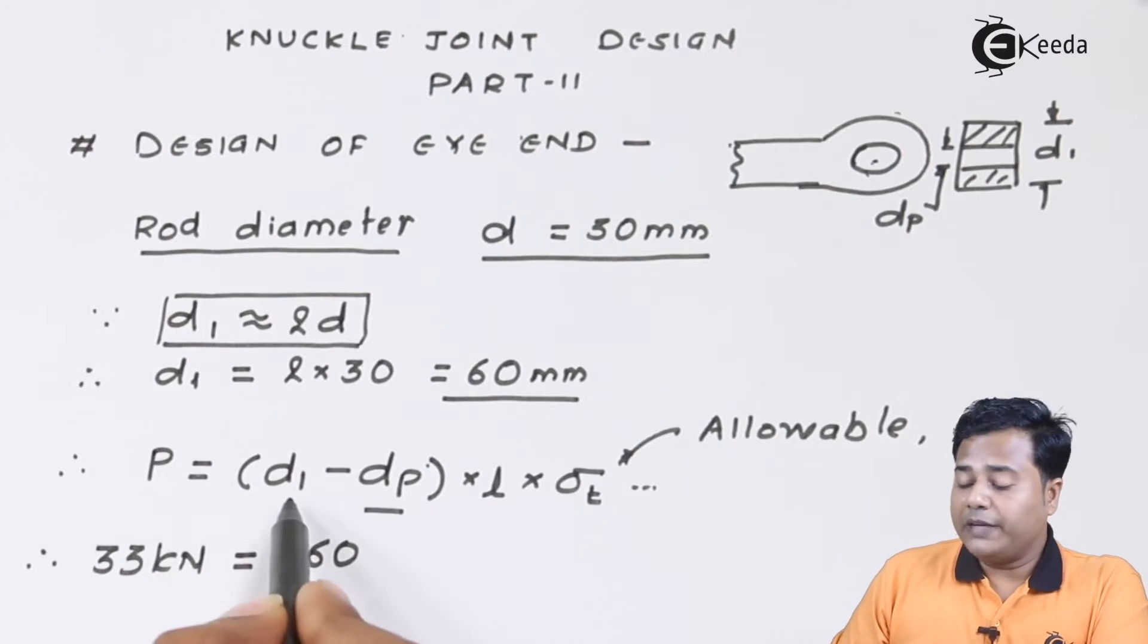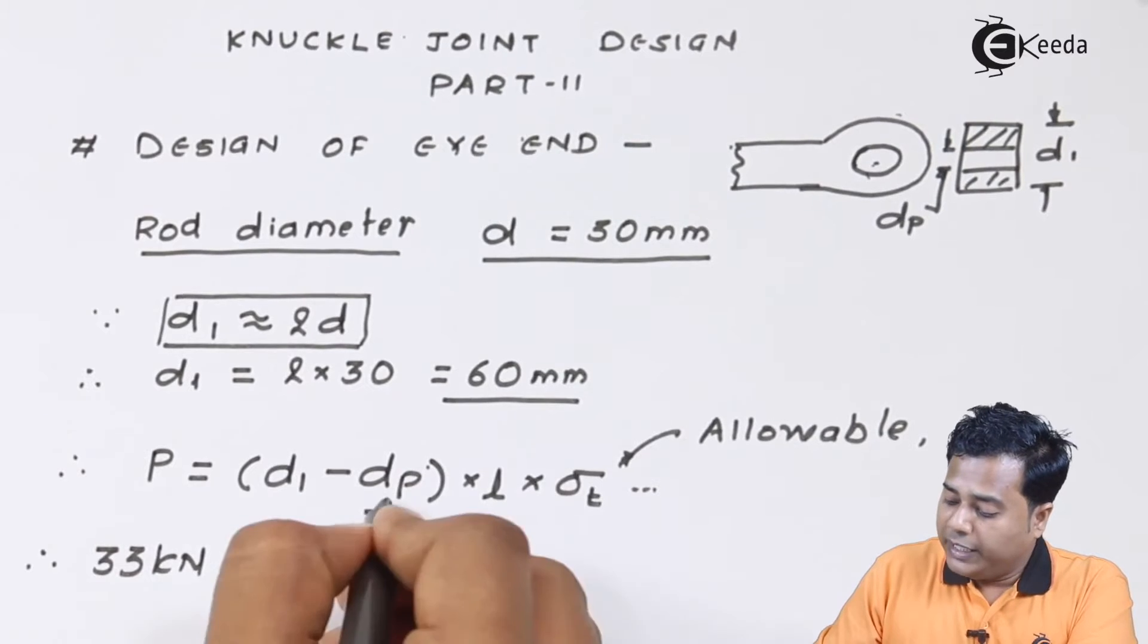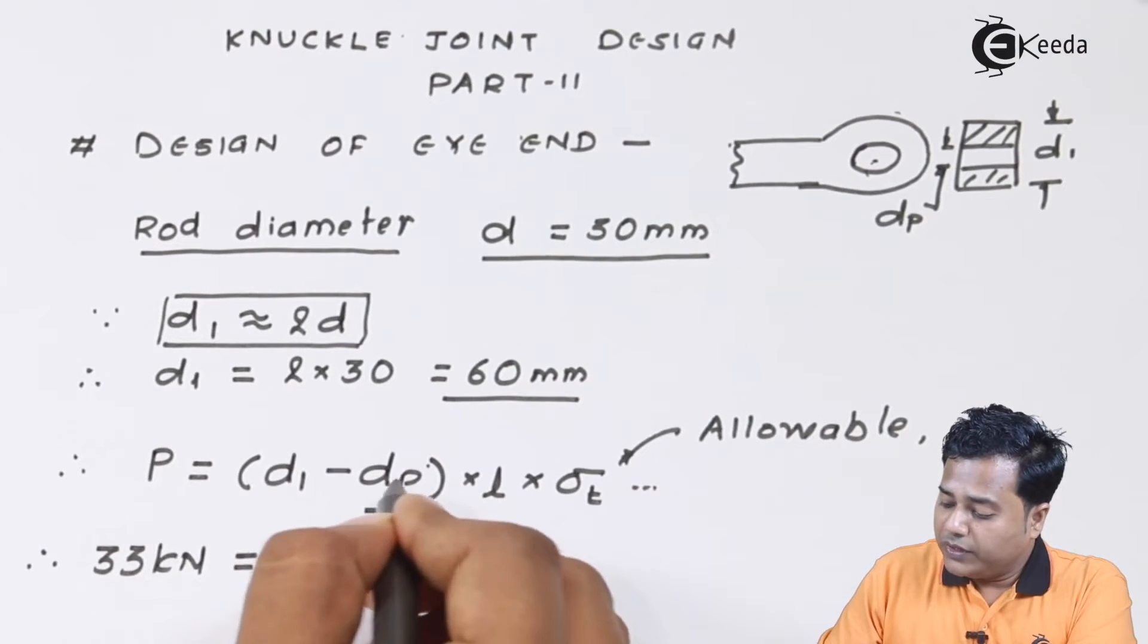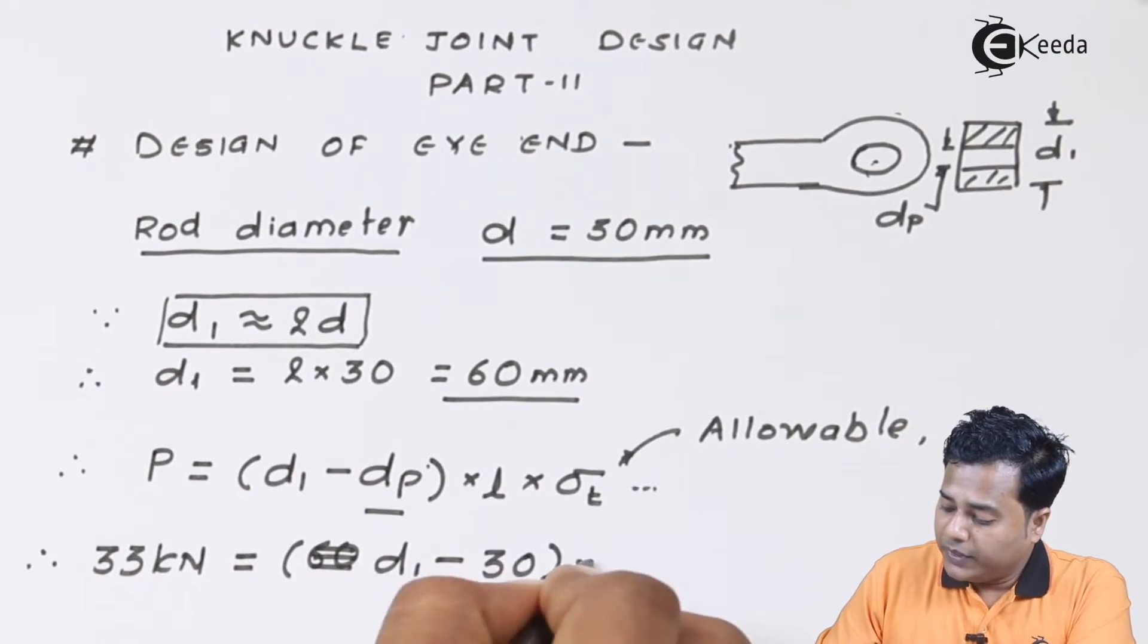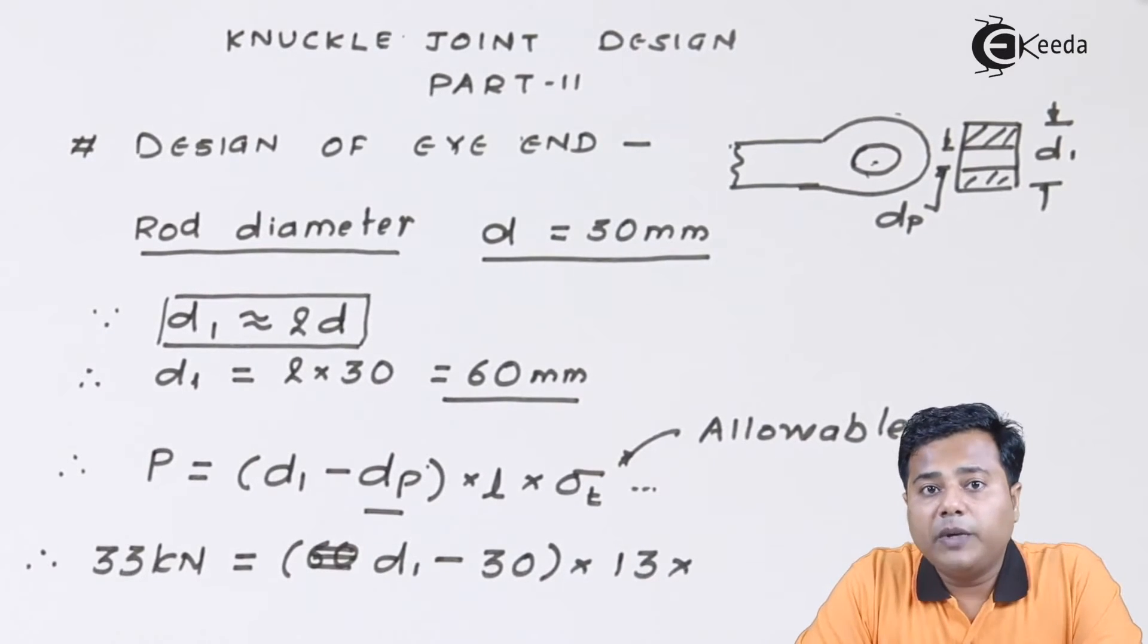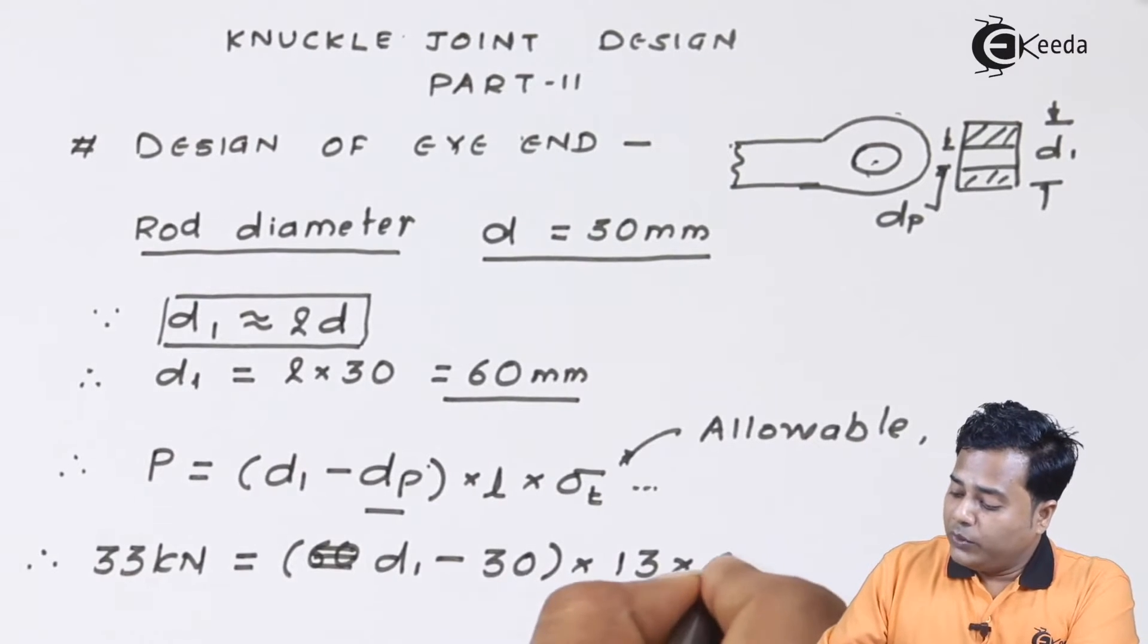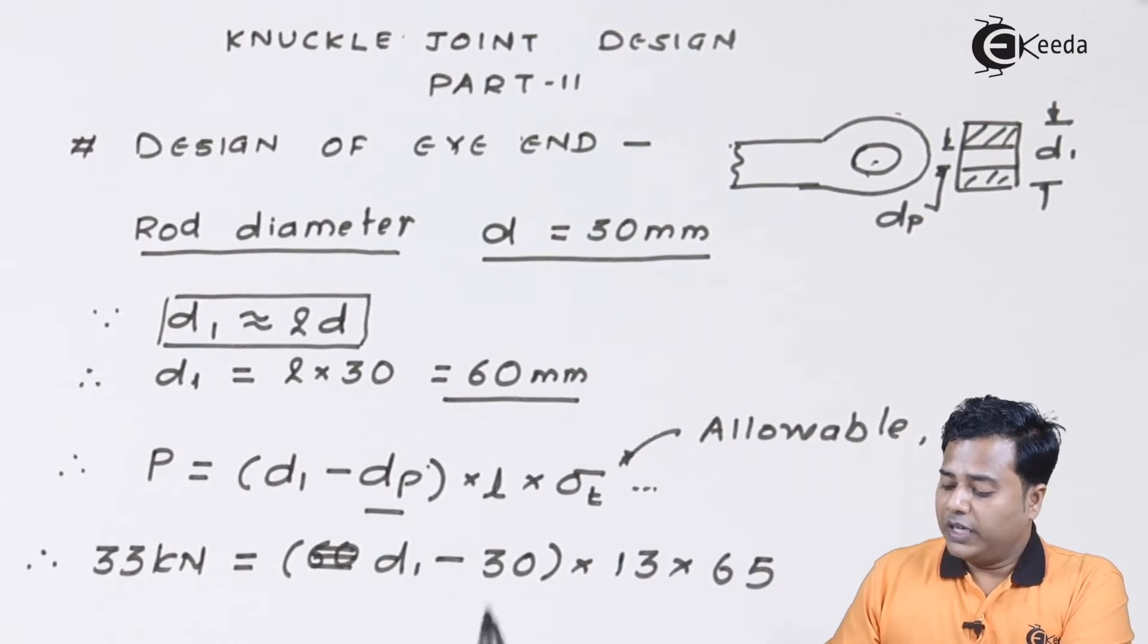In my case, d₁ will be unknown for some time. dp we already know is 30, into length we have found out is 13, into the σt allowable value of tensile stress in our case is 65 newton per mm². If I solve this, the only unknown that I have is d₁.